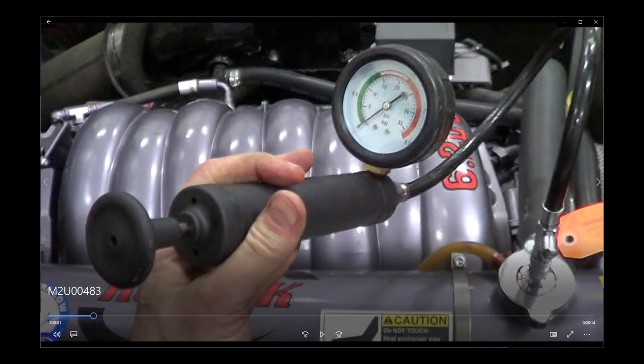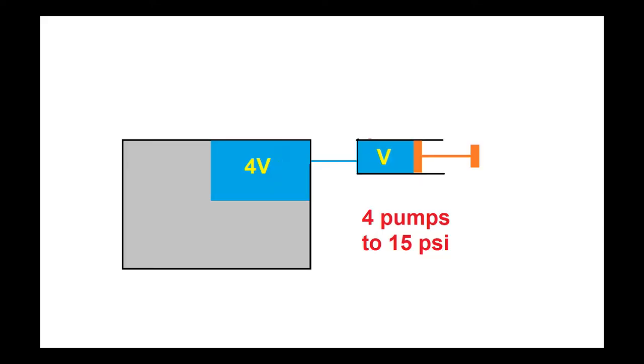This means that the pressure doubles when the gauge pressure is 15 PSI, not when it's 30 PSI. Now suppose the volume of air trapped in the engine is much larger at 4V instead of 1V, and suppose you still have a 1V pump attached to it.